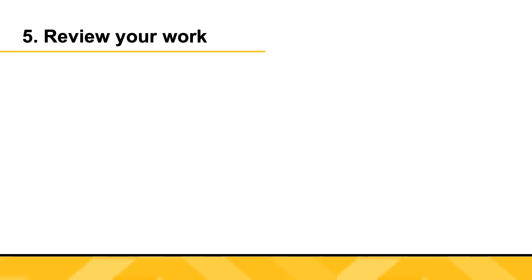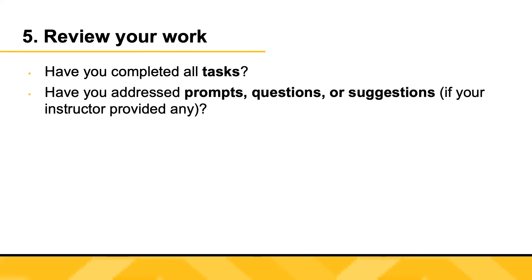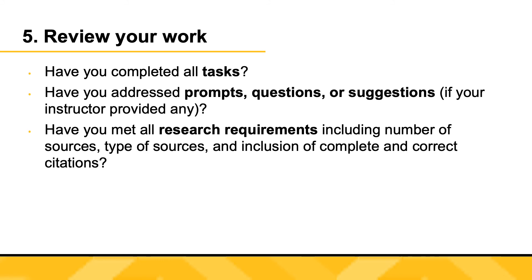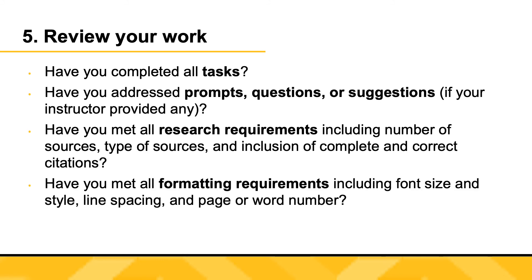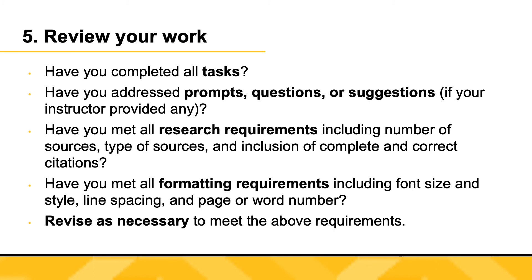Once you've made sure you understand the assignment guidelines and you've begun working on a draft, keep the guidelines or checklist handy and refer to them often as you write to stay on track. Once you've completed a full draft, review your work to make sure you've accomplished all the tasks set up by the informative, relational, and interpretive keywords, addressed prompts as appropriate, met all research requirements, and formatted your work correctly. Revise as necessary to ensure your work meets all requirements established in the assignment guidelines.